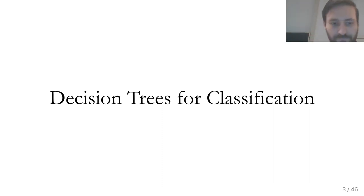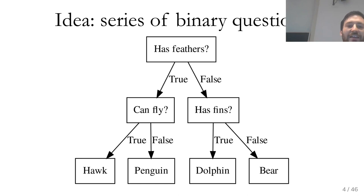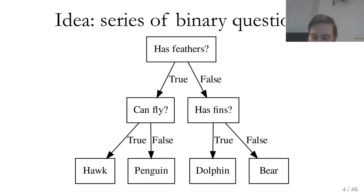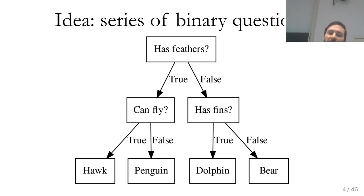I want to start with decision trees for classification. Trees work both for regression and classification in mostly the same way. The idea is you learn a series of binary questions — think of it like a binary decision diagram. For example, if you want to figure out which of four animals you're considering, you could ask questions like a game of 20 questions: does this animal have feathers or not?